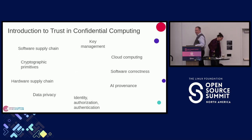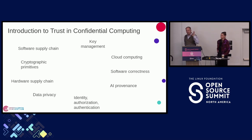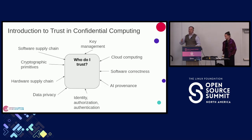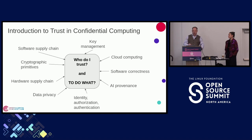I hope that everyone here cares about at least one of these things: software supply chain, key management, cloud computing, software correctness, AI provenance, data privacy, hardware supply chain, identity authorization, authentication, cryptographic parameters — all of those things. The question we're trying to ask is: who do I trust in relation to each of those things, and specifically, to do what? Because trust means you trust an entity to do a particular thing in a particular way.